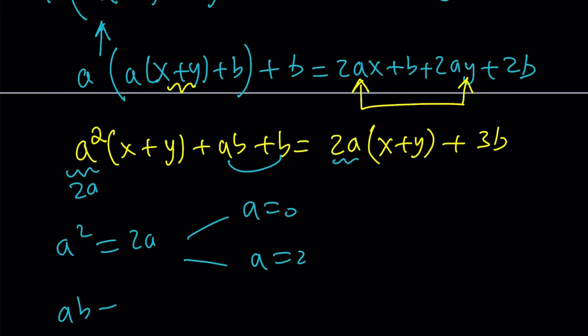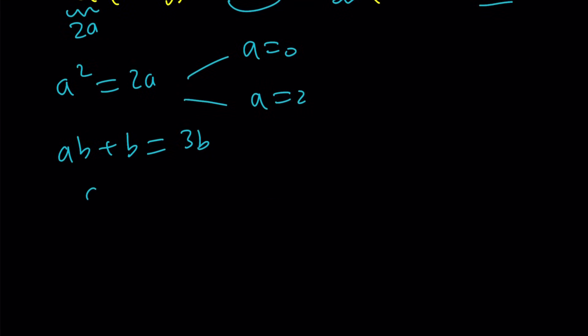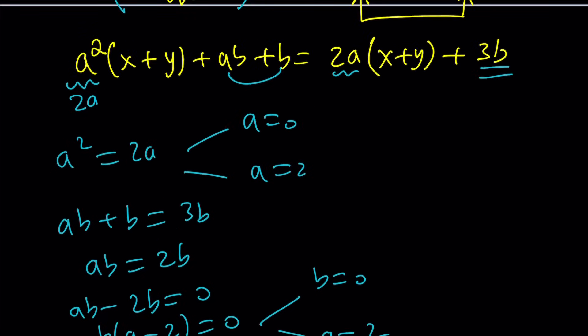And then the constants, ab + b must equal 3b, which is the constant here. And then from here we get ab = 2b. And then if you factor out a b, you get two things. Either b=0 or a=2. Now let's take a look at each case here, starting with a=0. If a is equal to 0, you probably noticed from this equation, b also becomes 0, because if you replace a with 0, you get 2b = 0. So b=0.